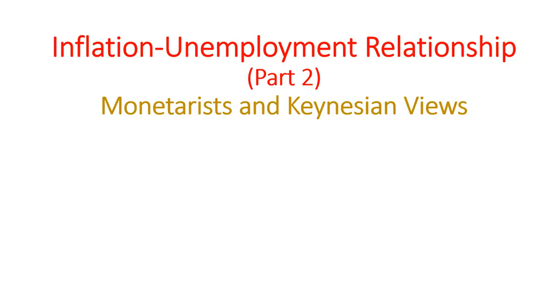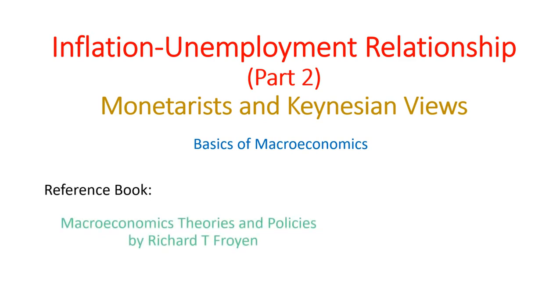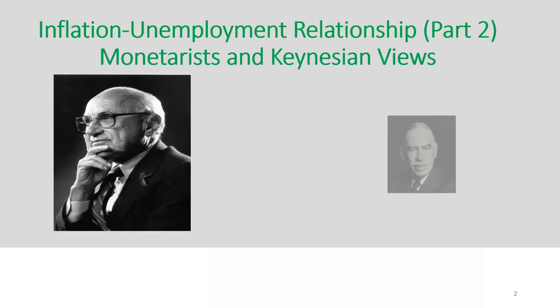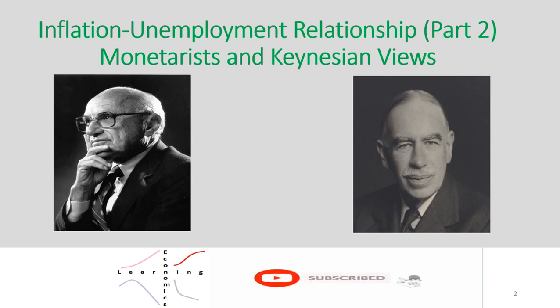Hello and welcome to this class of Basics of Macroeconomics. I am your teacher Muhammad Nadeem Sarwar. Today we continue our discussion on Unemployment and Output Relationship. This lecture is mainly based from the book Macroeconomics Theories and Policies by Richard T. Froyen. In this lecture, we mainly discuss Milton Friedman's theory about Natural Rate of Unemployment and Output. Then we discuss the Keynesian view about the relationship between output and unemployment.